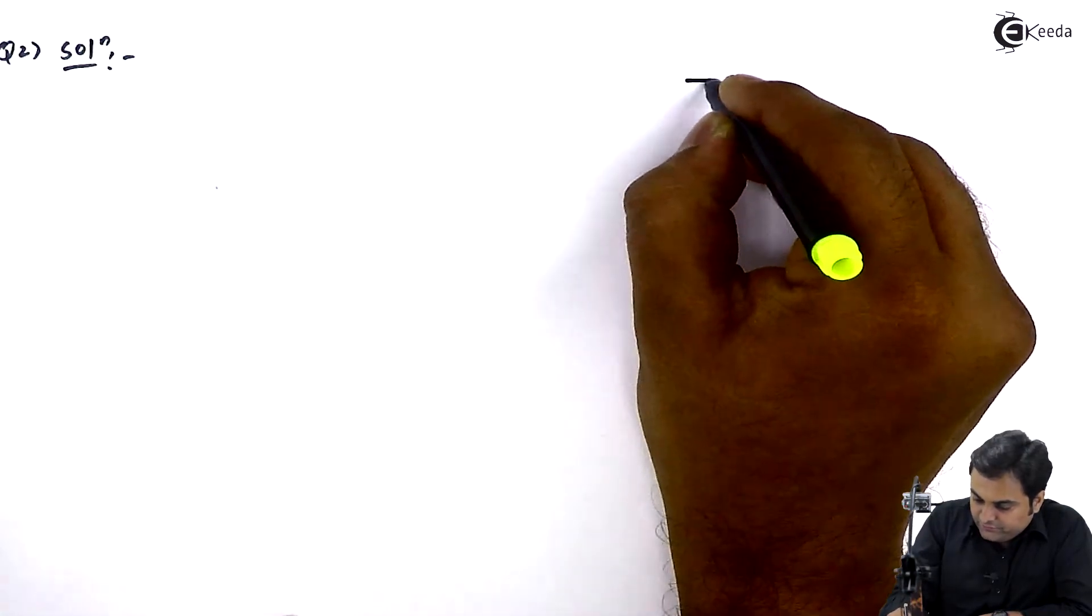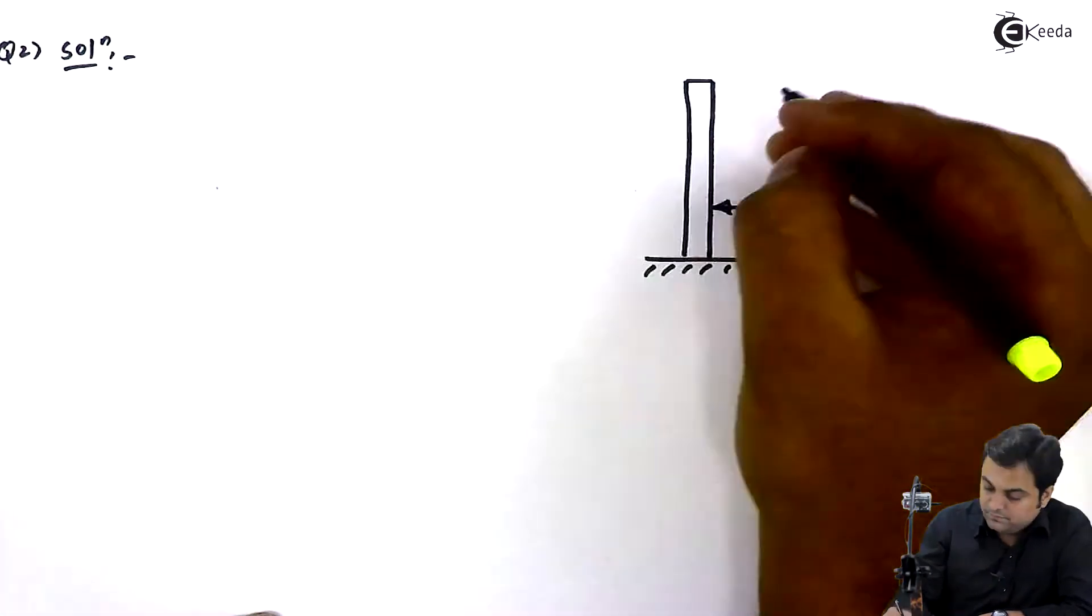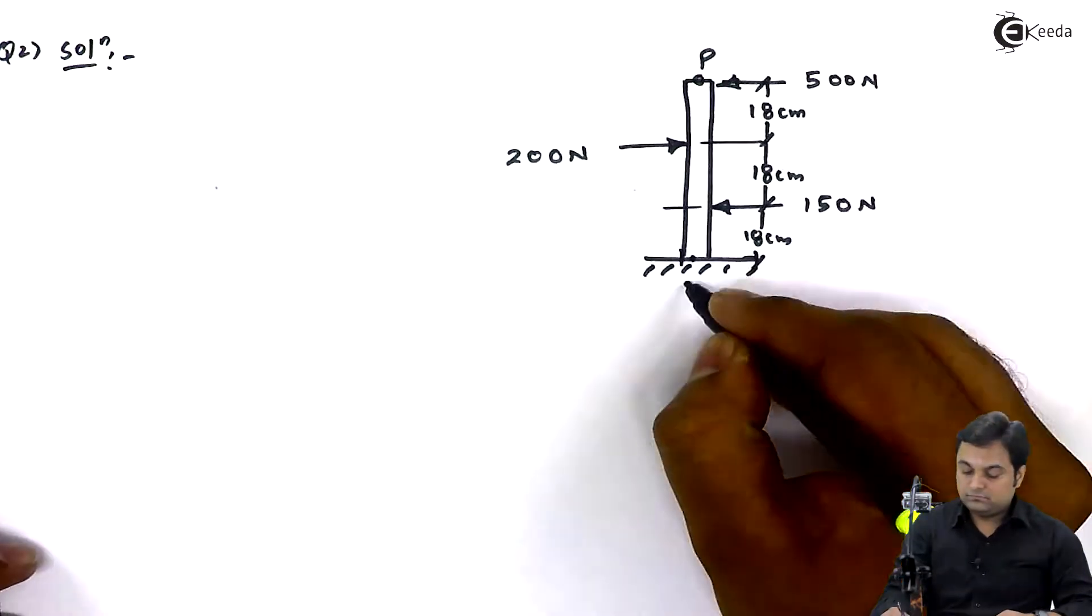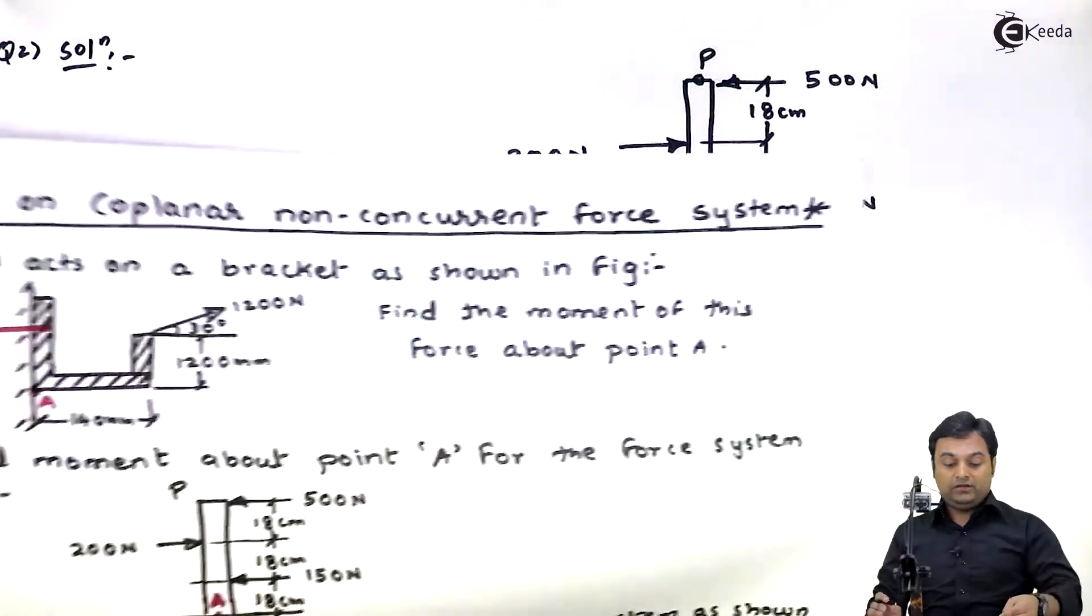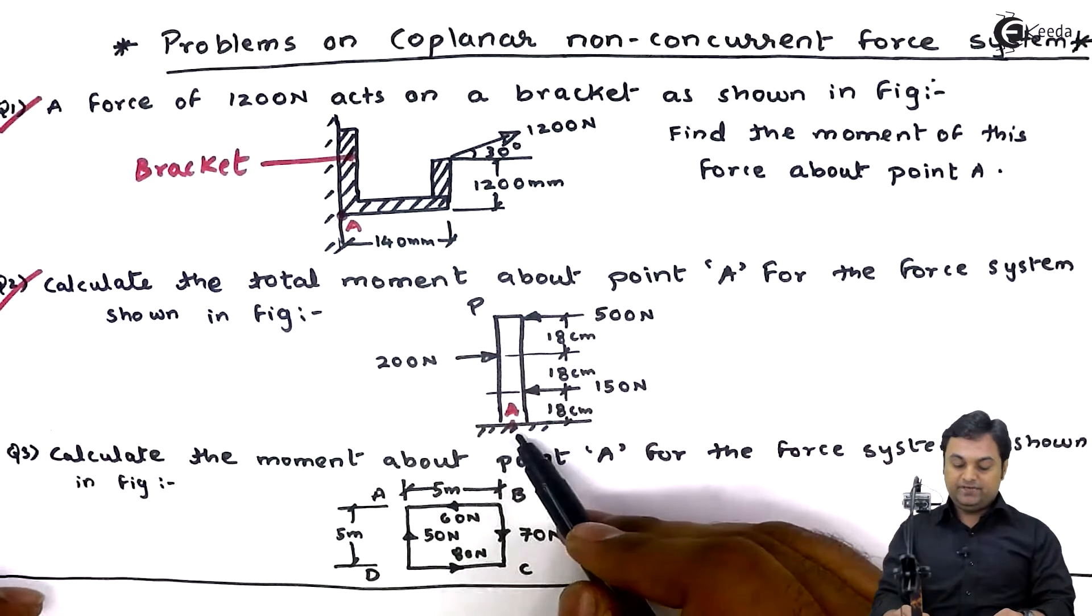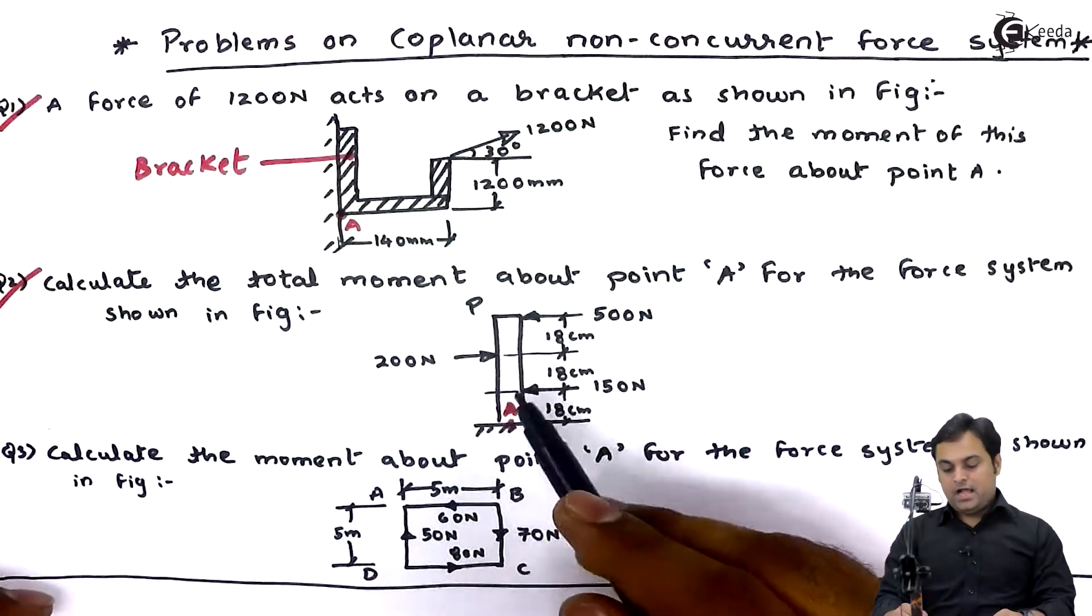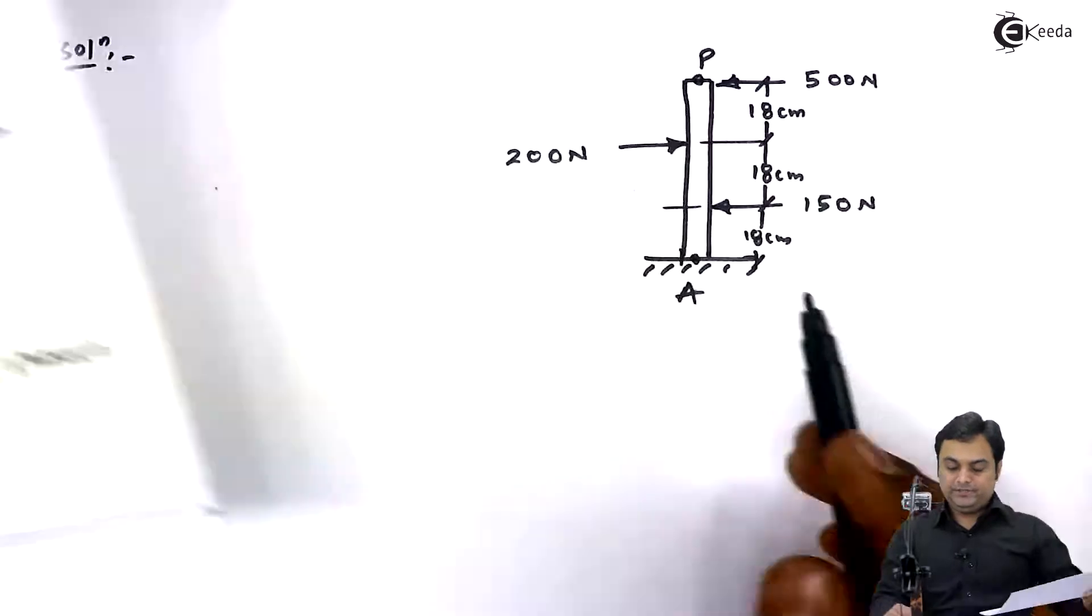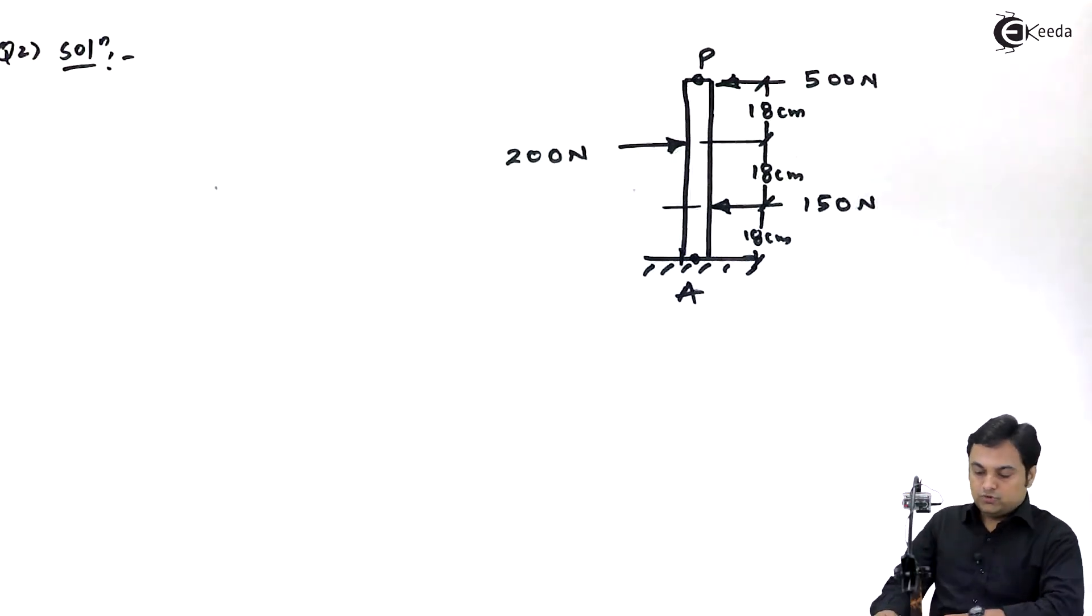The question is we have to calculate the total moment about point A which is at the bottom. I have to calculate the moment of all forces about point A at the bottom.